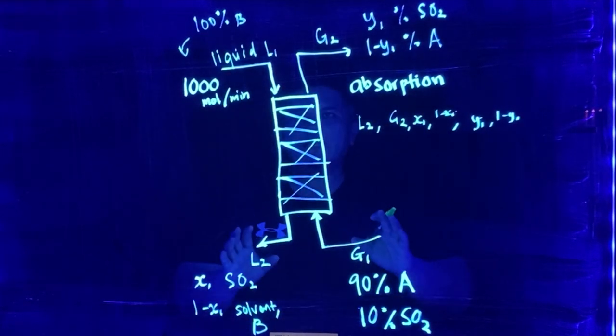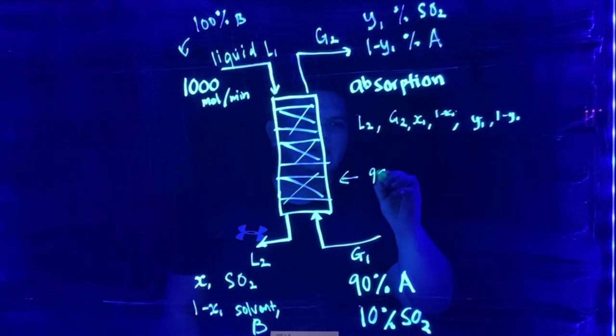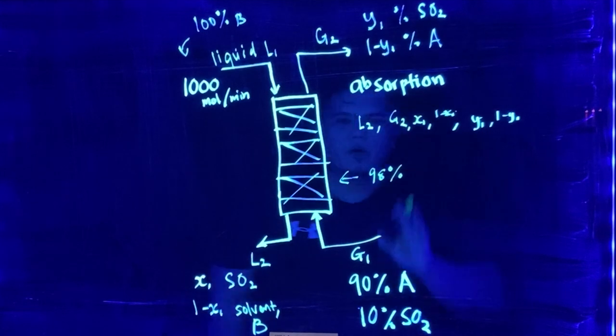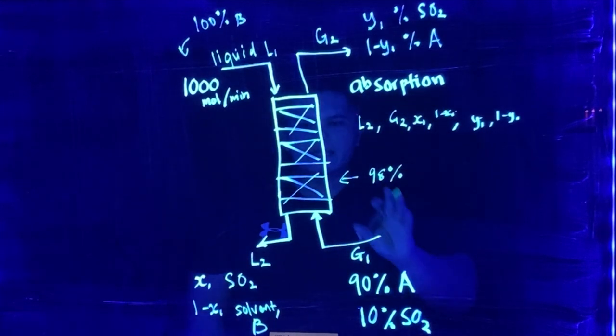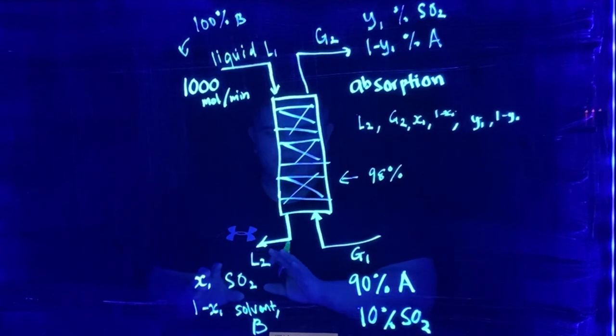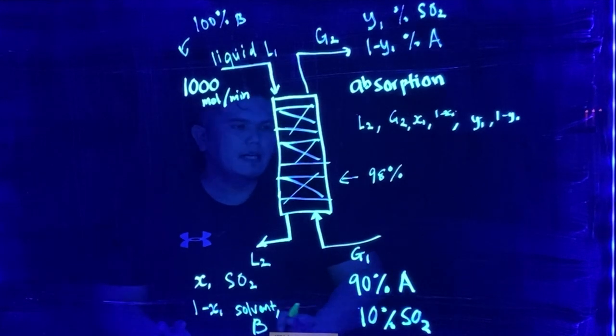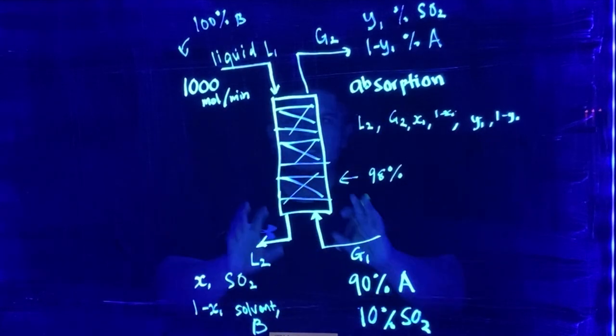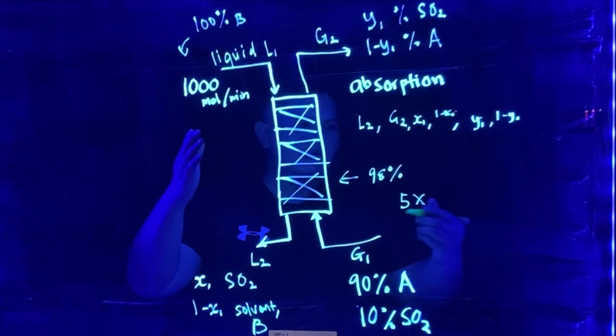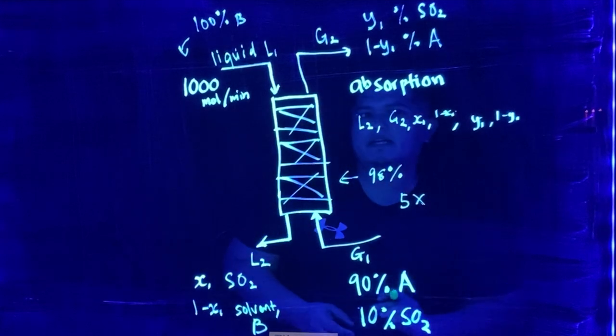But at the same time, another important information being given here is that this column efficiency is 98%, which means that there will be 98% of SO2 which will be absorbed by this absorption column, and the remaining will go out with the solvent. And another important information that was given from the problem is that the solvent flow rate is 5 times bigger than the gas flow rate.